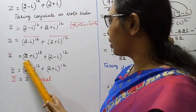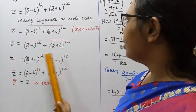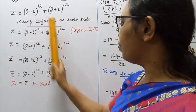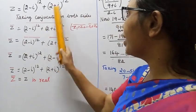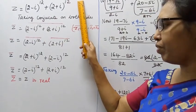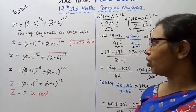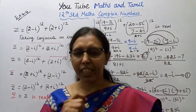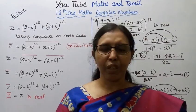So (2 − i)^12 + (2 + i)^12 = (2 + i)^12 + (2 − i)^12, which equals z. Therefore z̄ = z, confirming z is real. To summarize: first sub-division used the condition z̄ = −z for purely imaginary; second sub-division used z̄ = z for real. This channel helps you get 100 marks. Learn more, subscribe, and click the bell button.